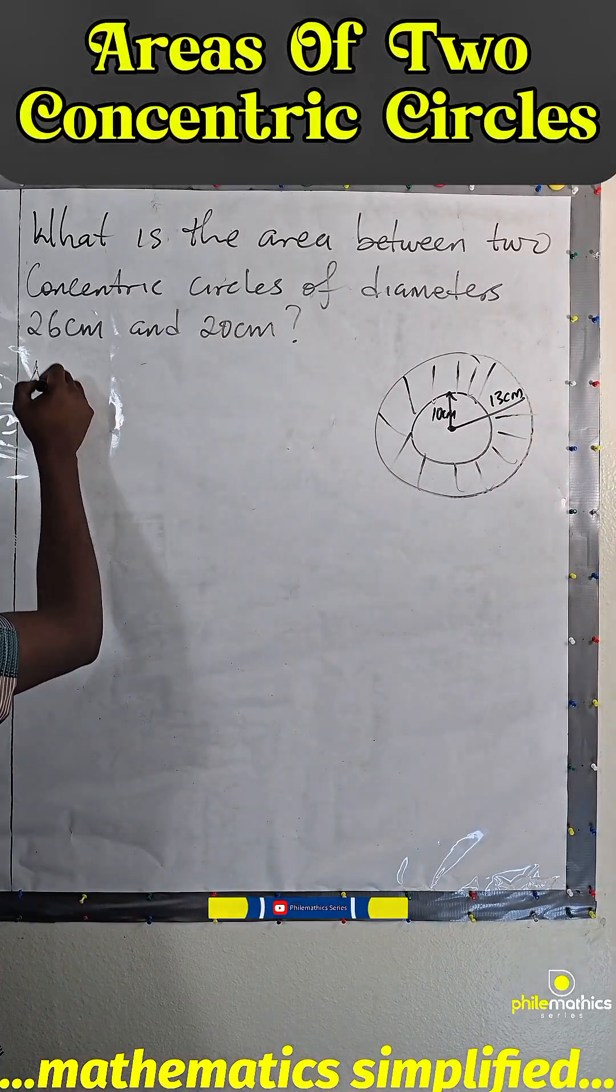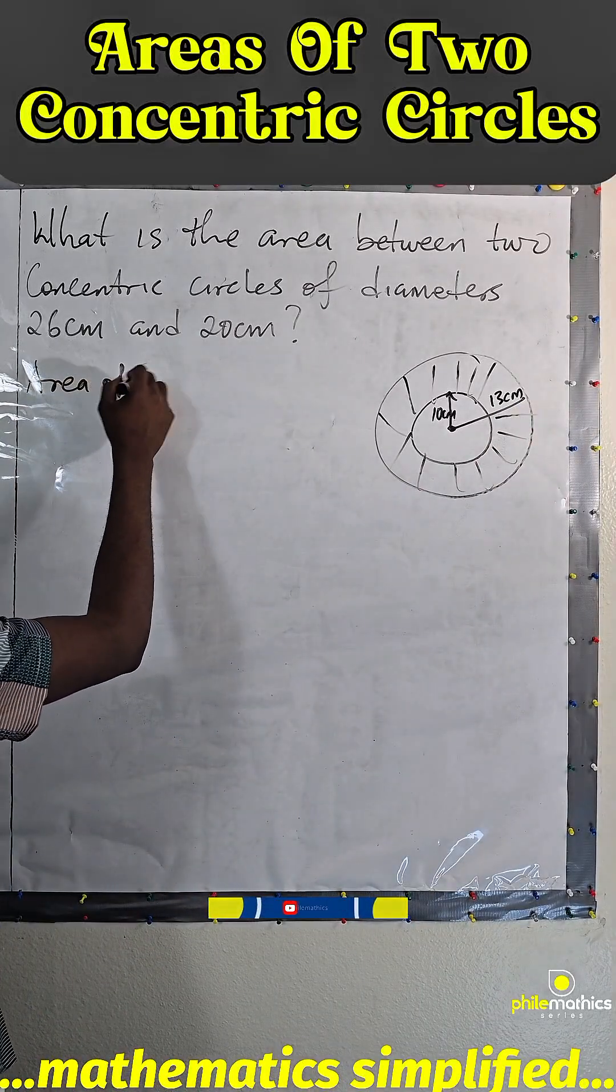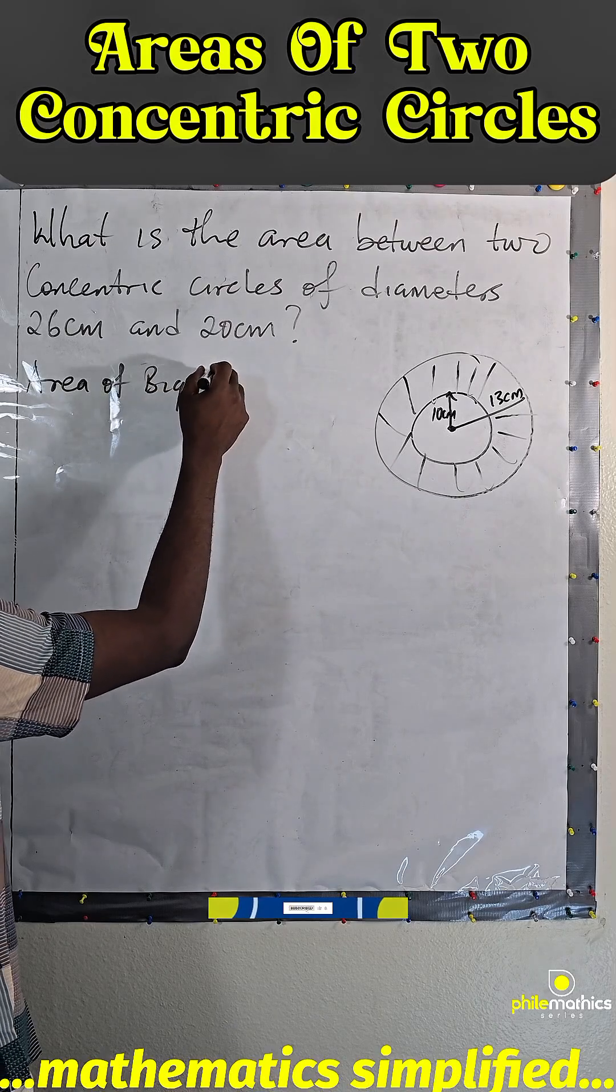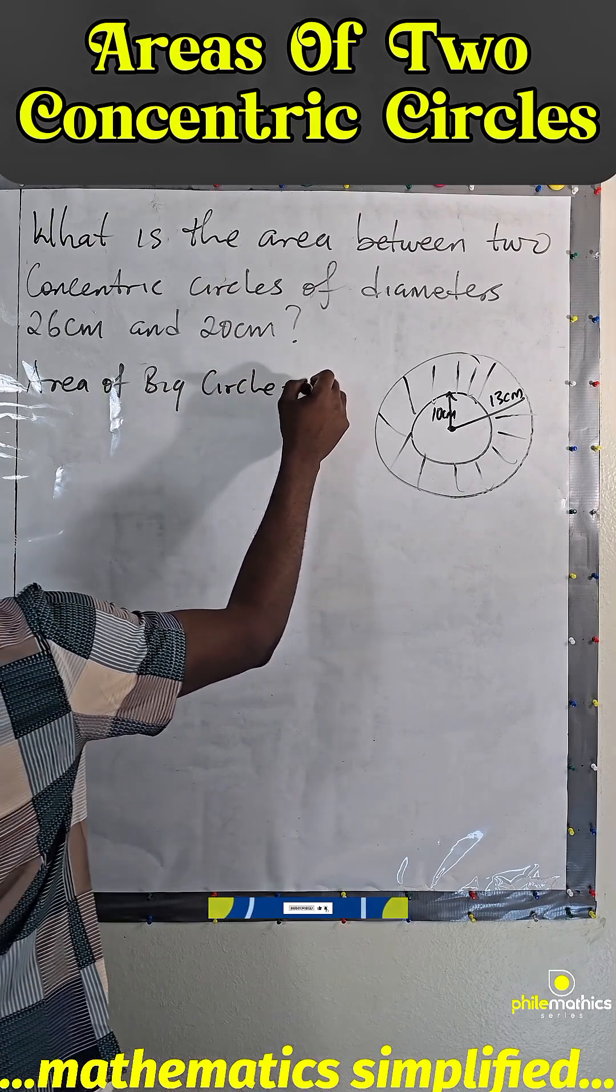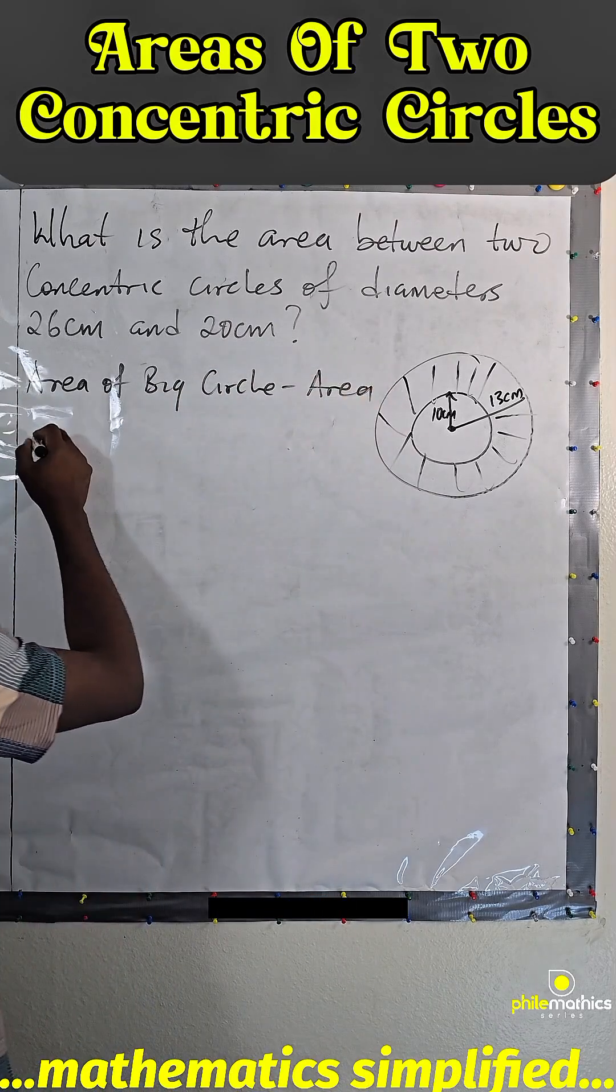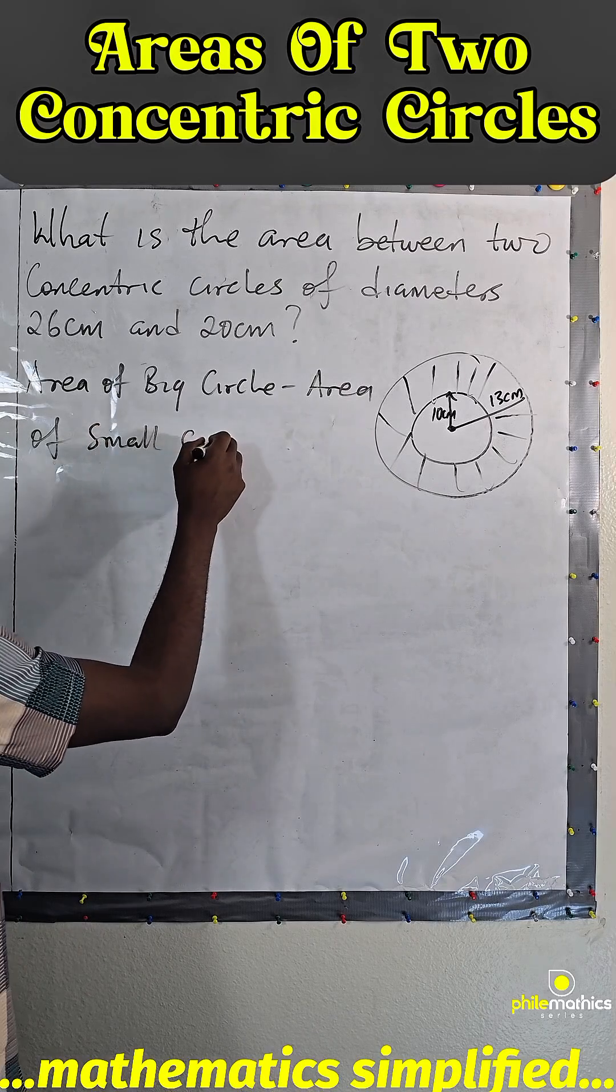It is simply area of big circle minus area of small circle.